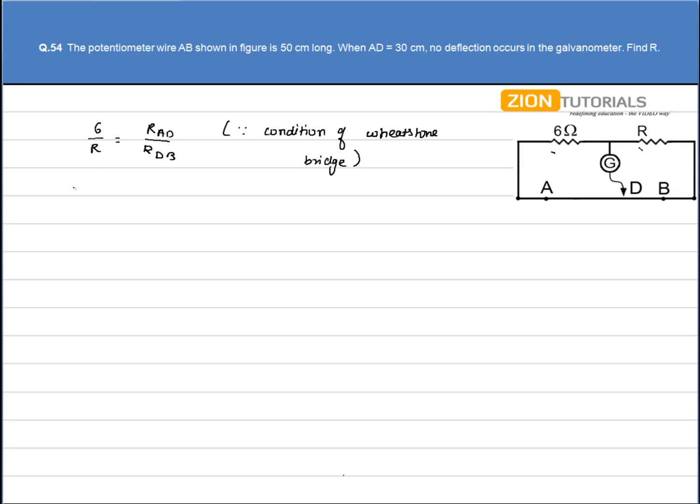So I have resistance as ρL by A. So I can write resistance RAD as ρL by A. So I have RAD by RDB is equal to LAD by LDB.